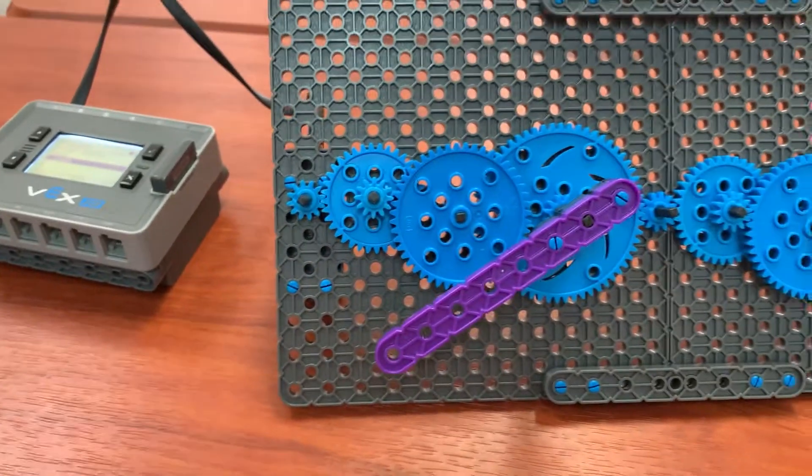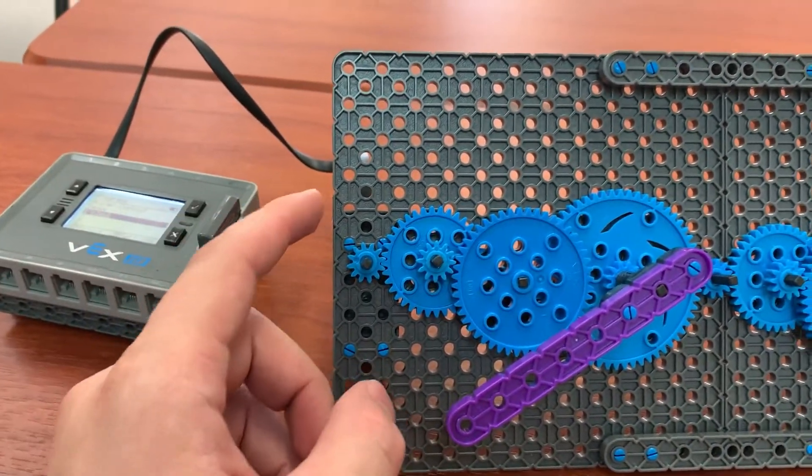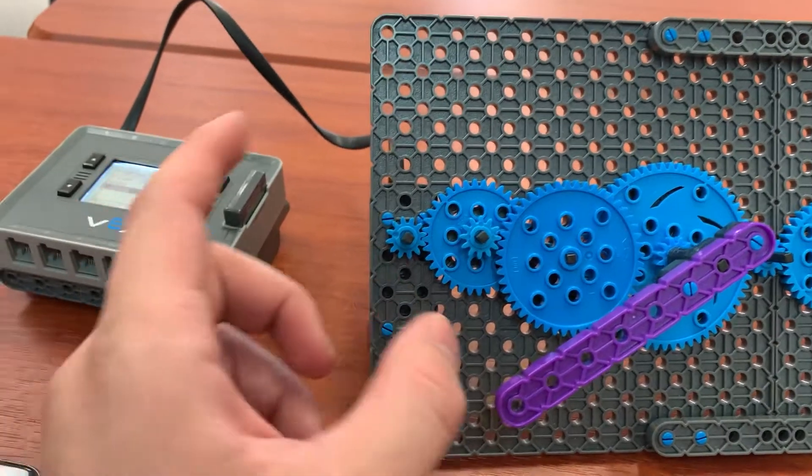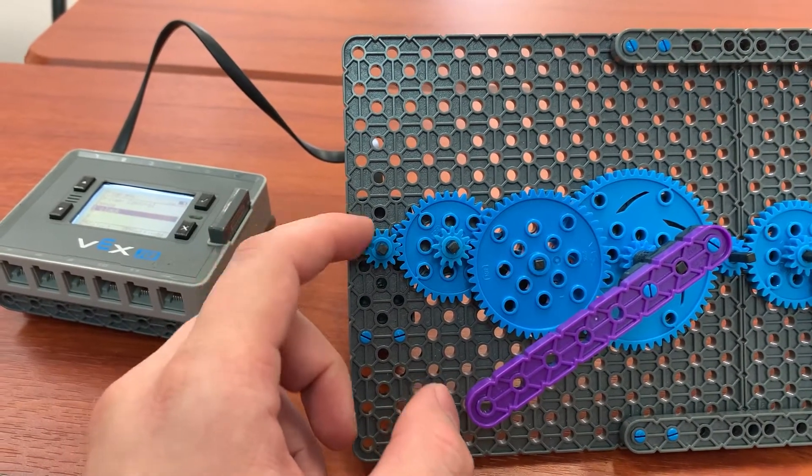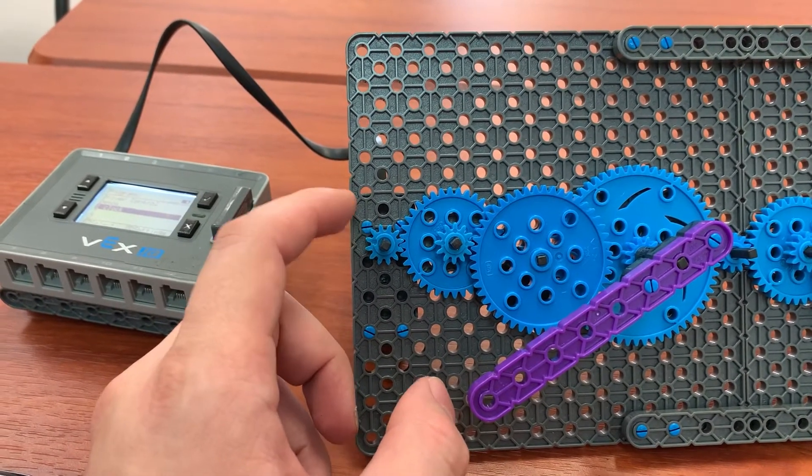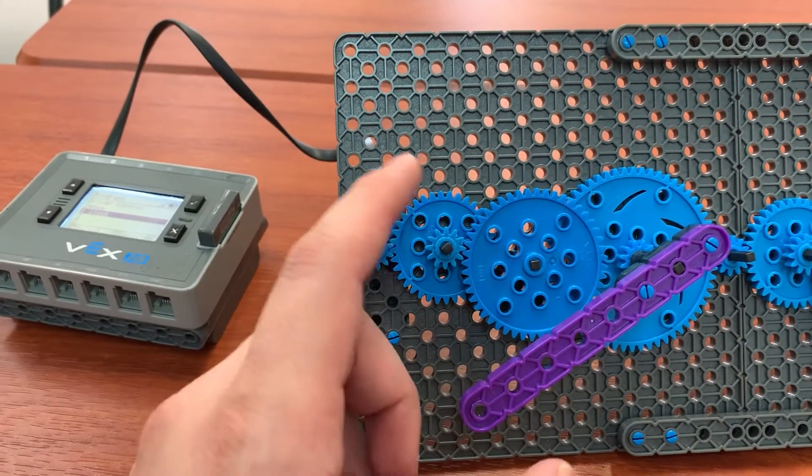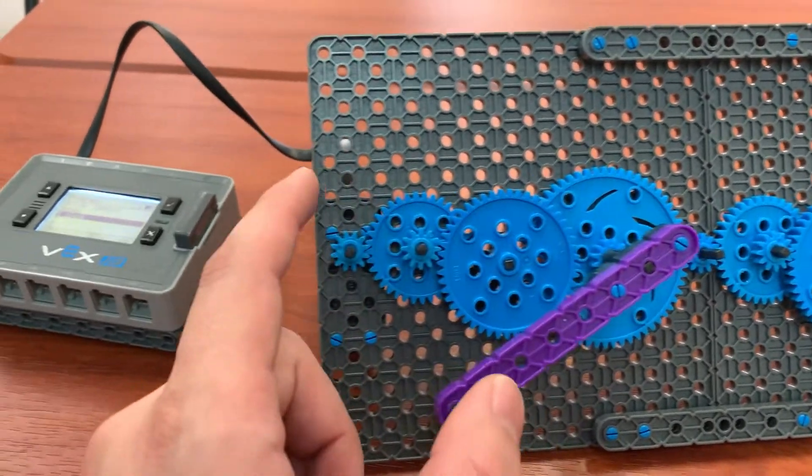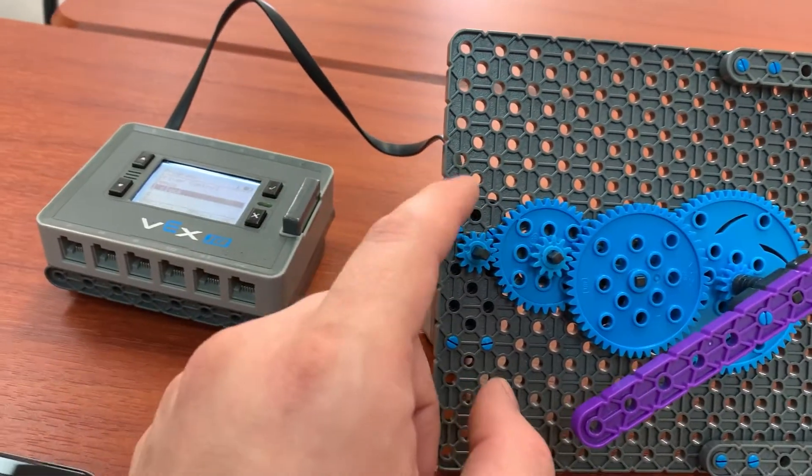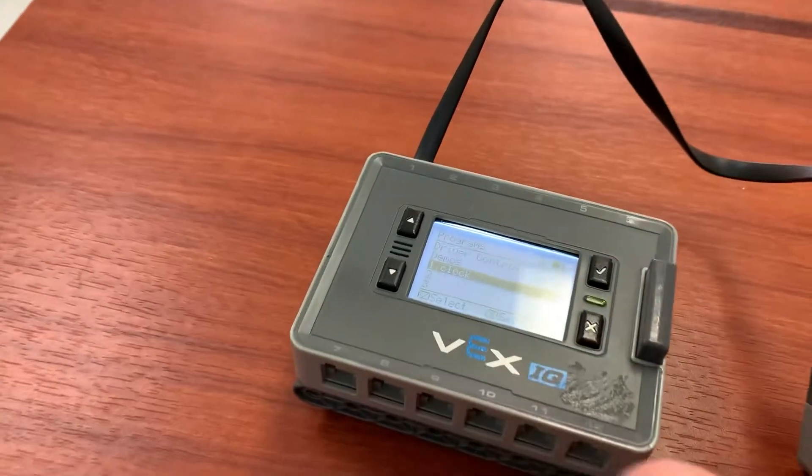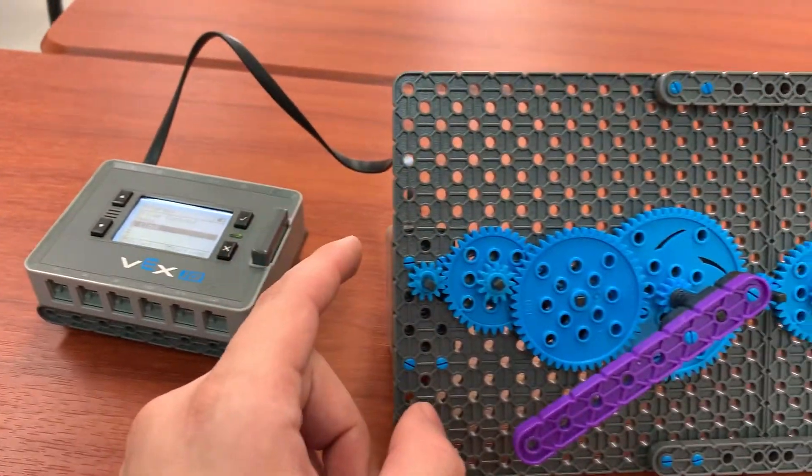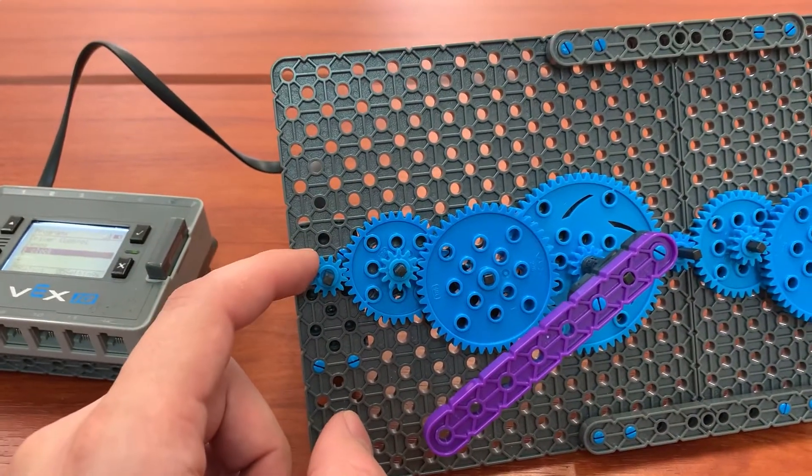So when we first set this up, the motors, I don't remember what the natural RPM of the motors is. I think it's around 95 or 100 RPM. So what the first student did on day one who built this part of the mechanism was he programmed, he built a program called clock, you can see here, and he set the motor to 60 RPMs.